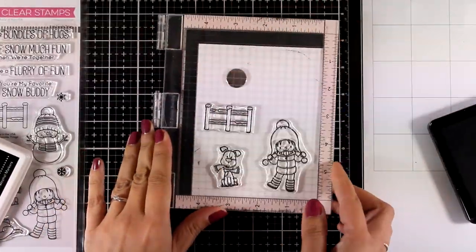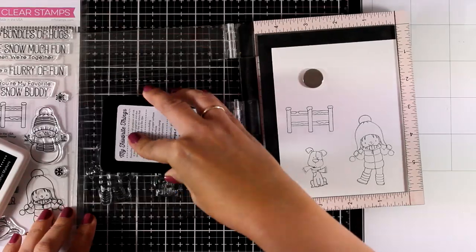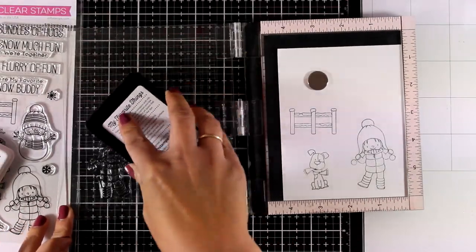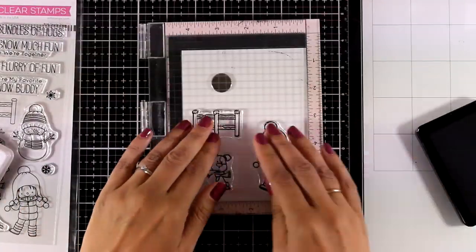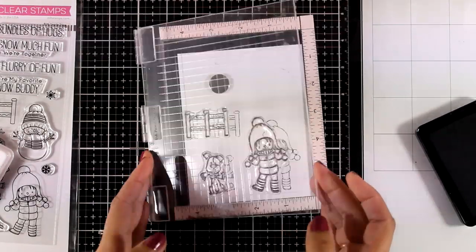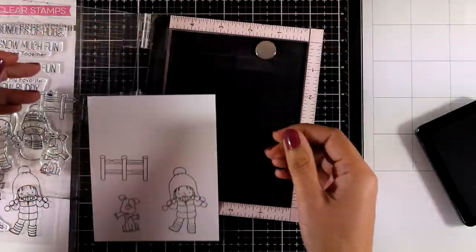So I'm stamping my images and I picked up the girl, the little dog as well as the fence. I'm stamping it a couple of times with my Misty to get a good impression and I'm using an extreme black ink by MFT.